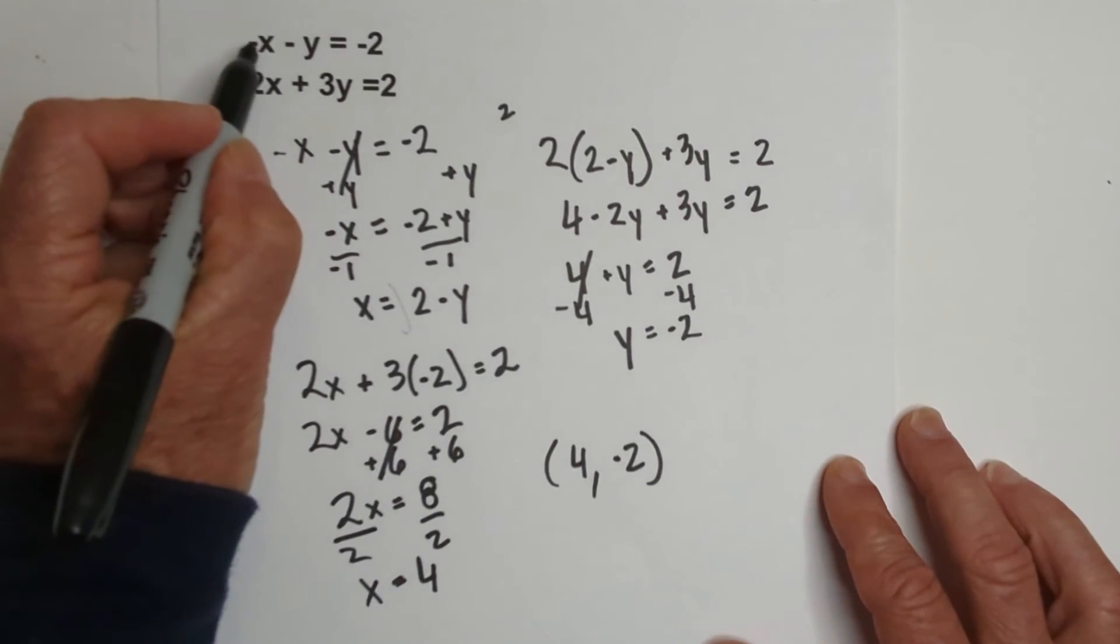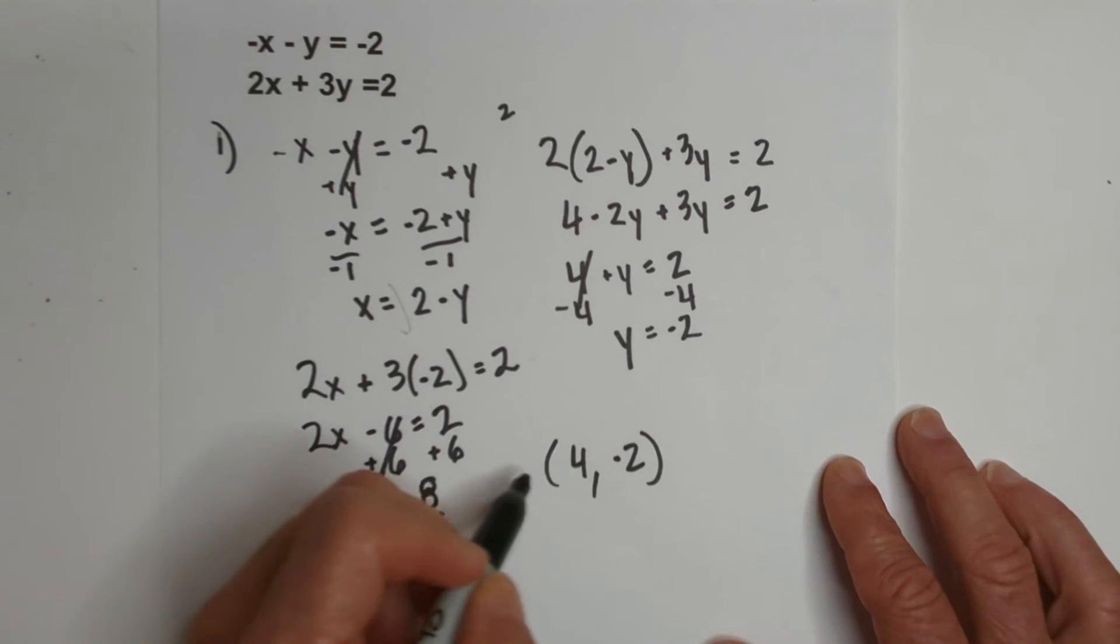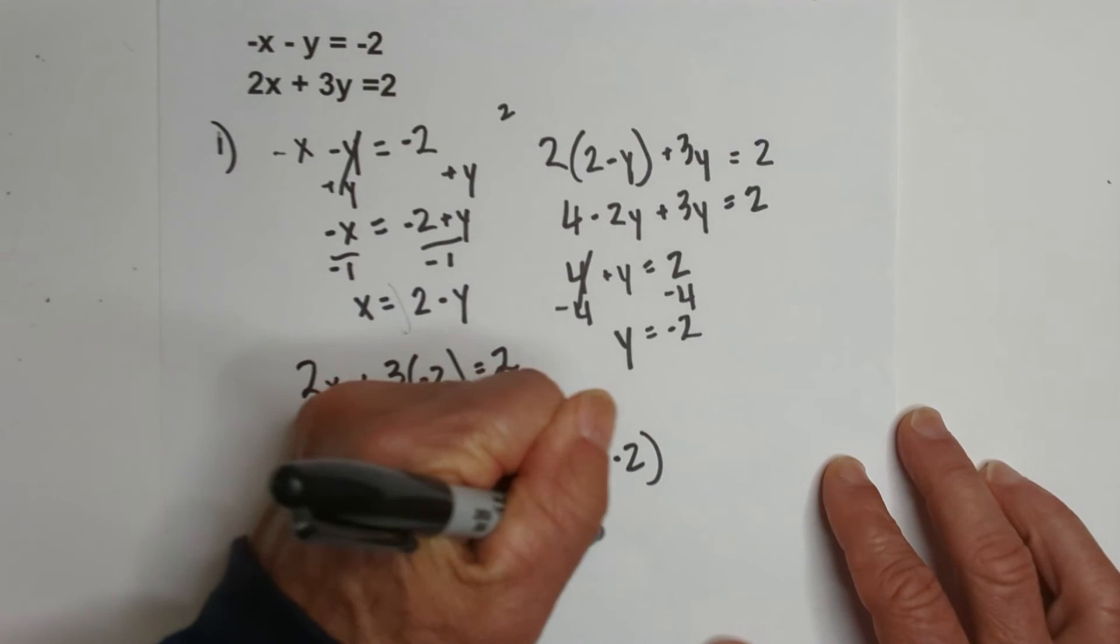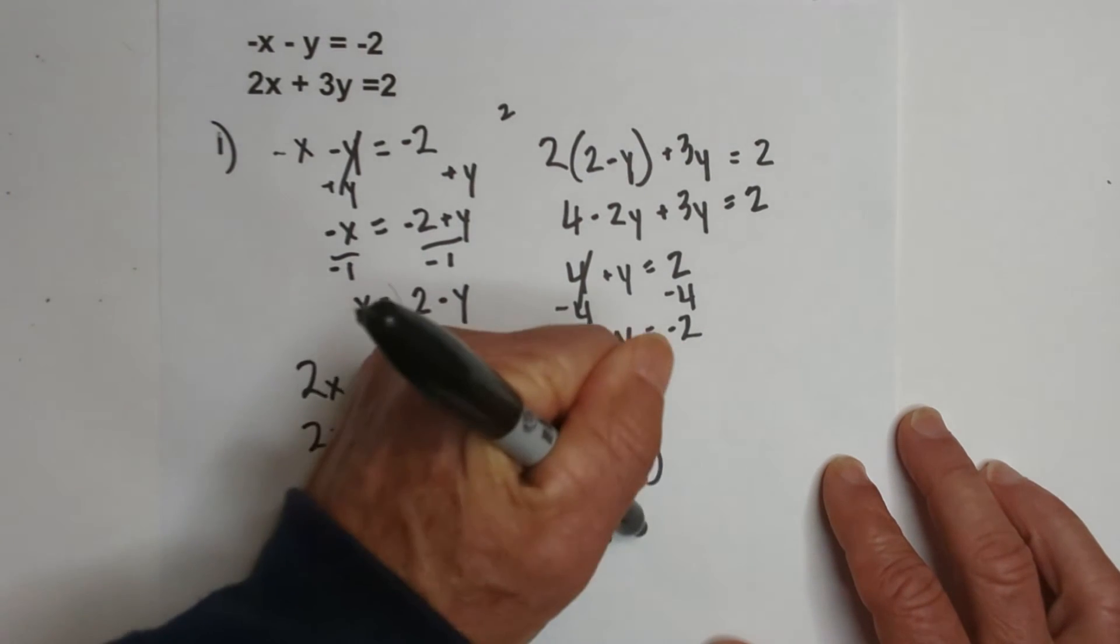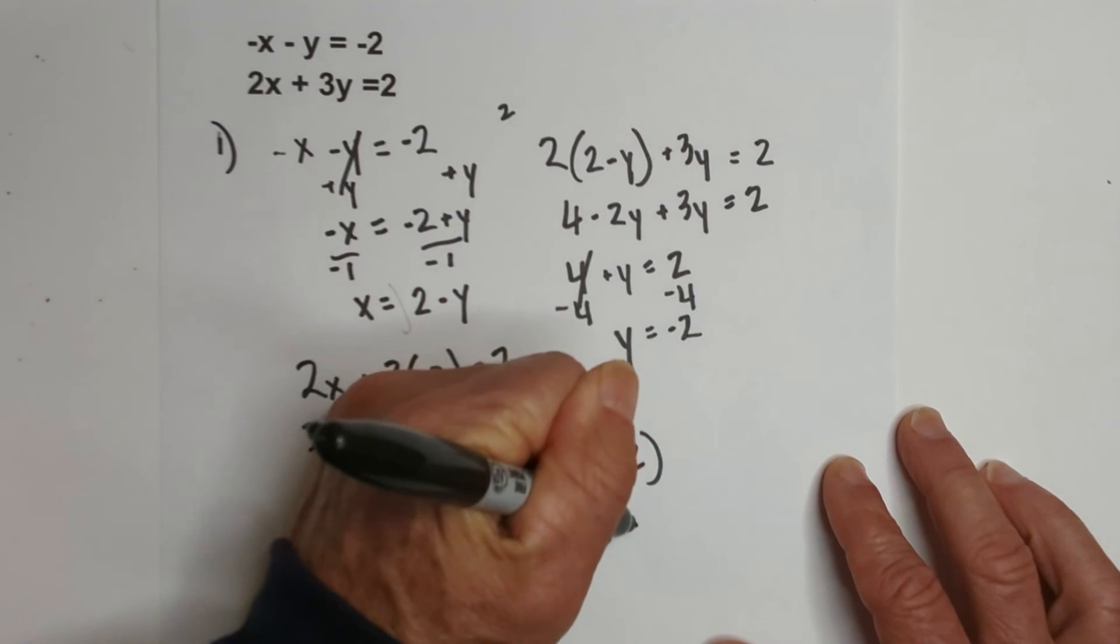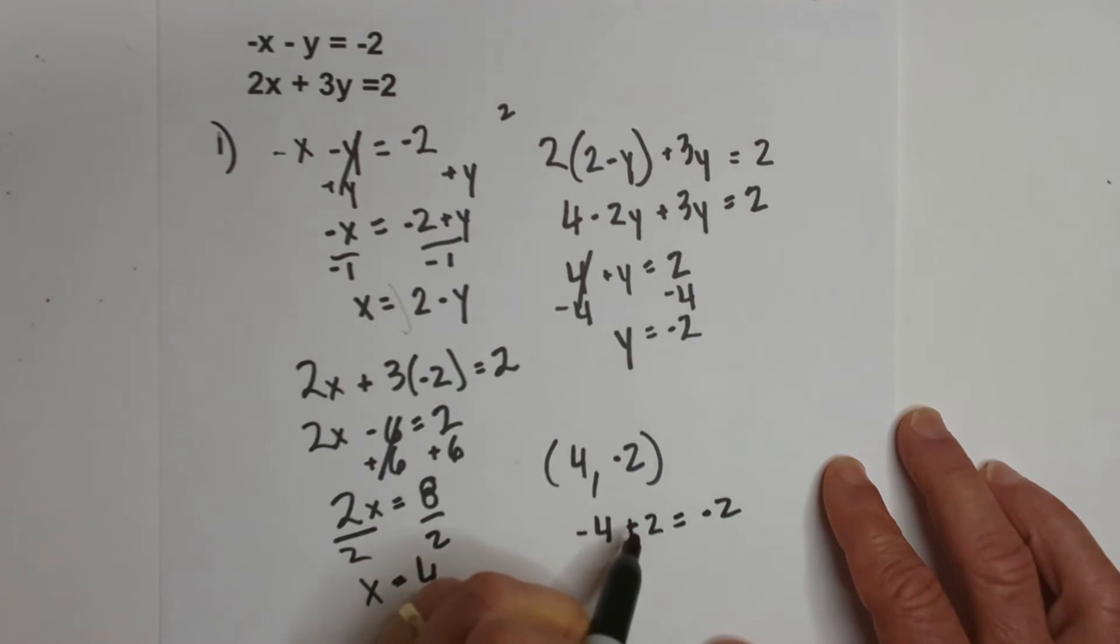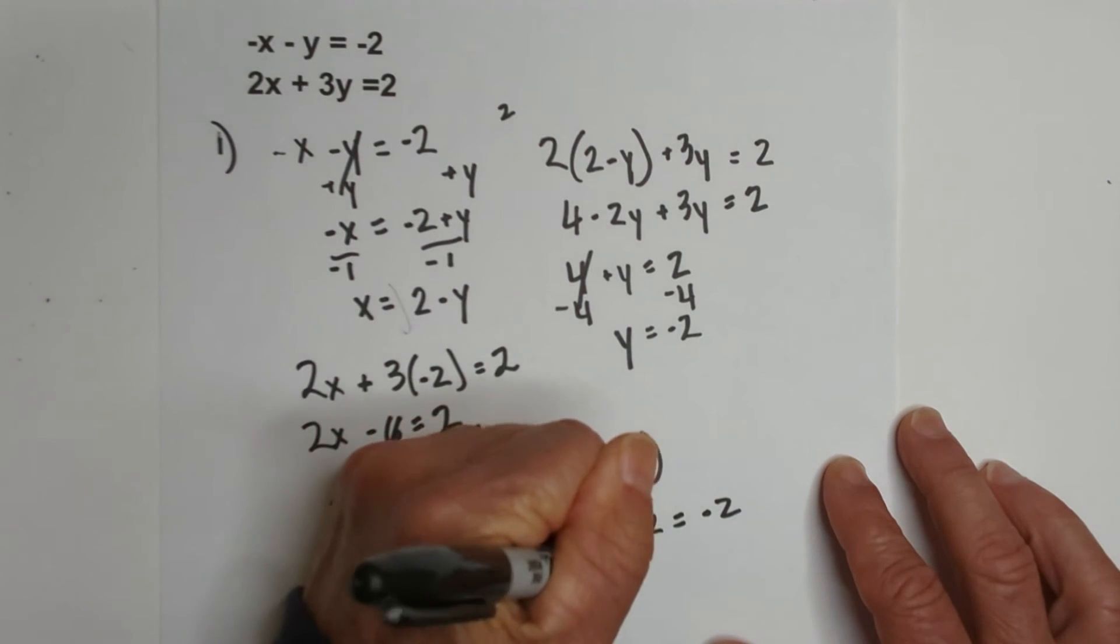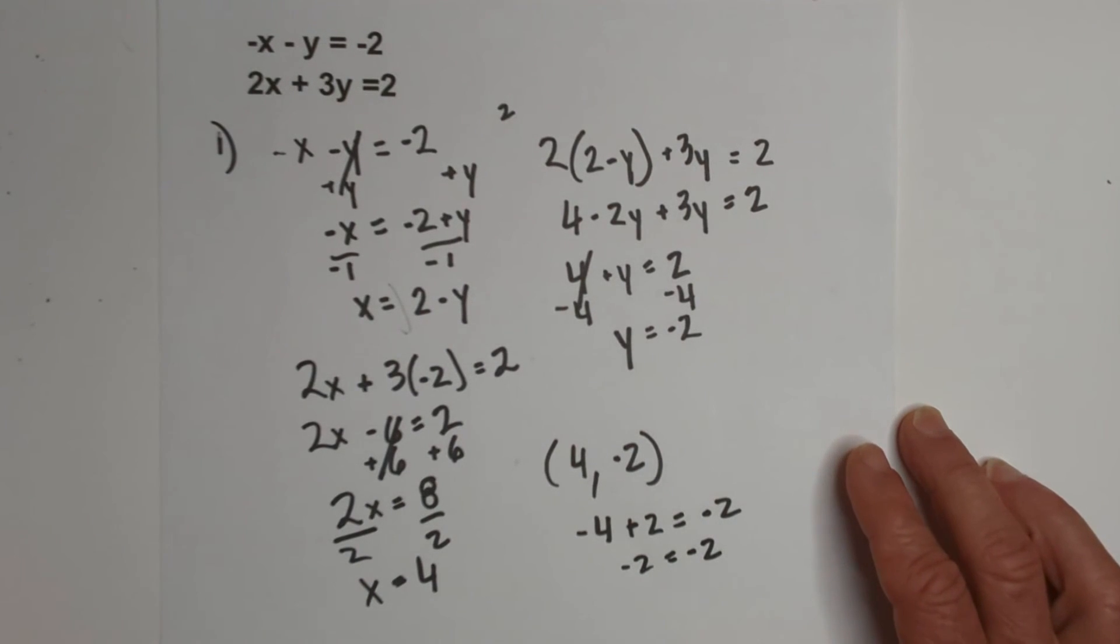So, I have a -x and x is 4. So, I have a -4 - y which is -2. A negative and a negative is a positive 2 = -2. A -4 and a positive 2 does indeed equal -2. So, the solution is correct.